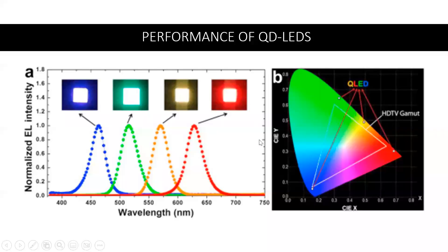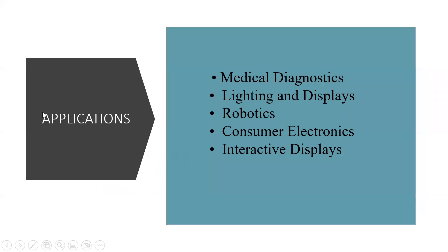This shows the performance of QD LEDs: high intensity blue light is emitted, followed by high intensity green light, then orange light with high intensity, and simultaneously red light emitting at high intensity. The applications of QD LEDs include medical diagnostics, lighting and displays, robotics, consumer electronics, and interactive displays.